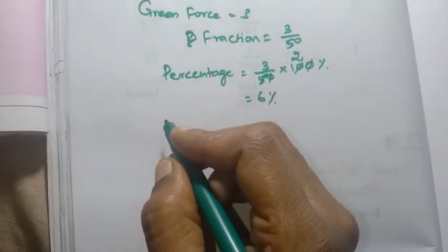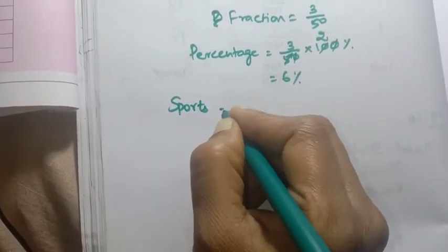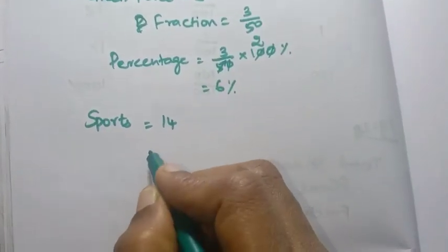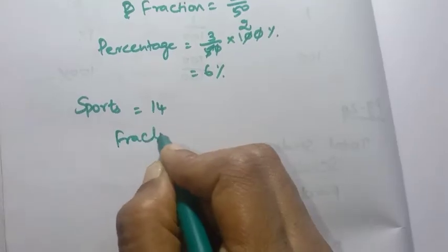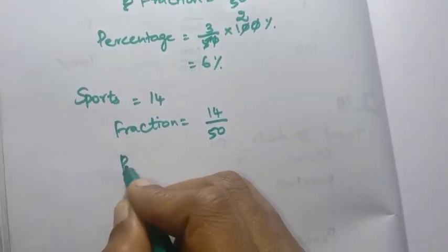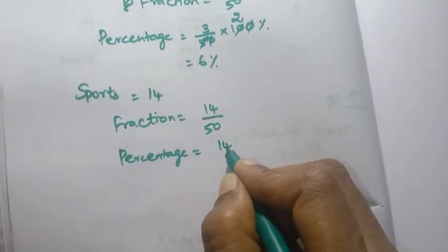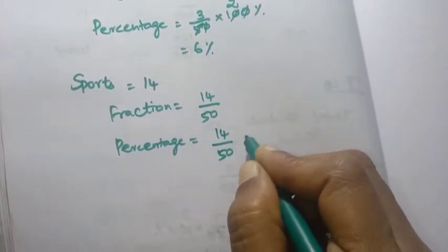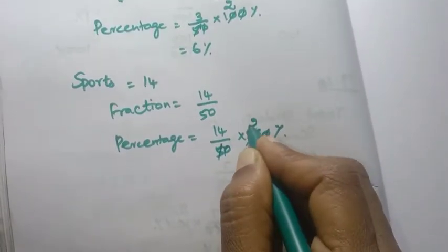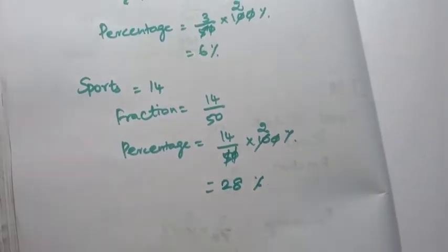Sports: 14 students involved. Fraction = 14 by 50. Percentage = 14 by 50 into 100. Cancel zeros: 5 twos are 10, 14 twos are 28 — so 28 percentage.